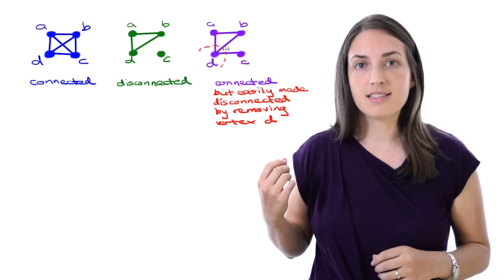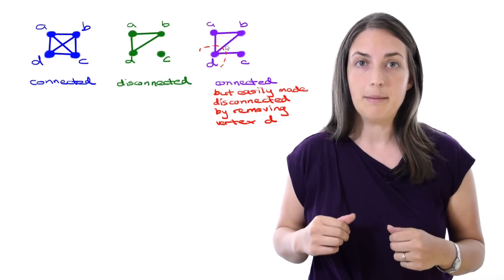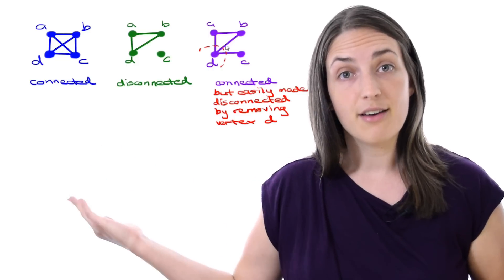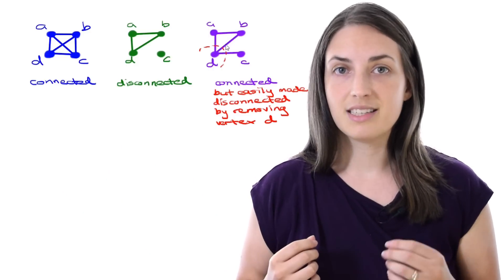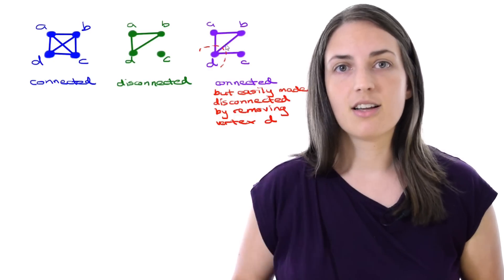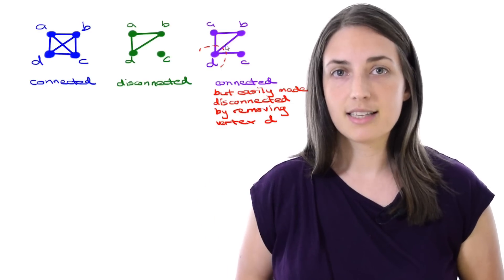If we remove vertex D, then vertex C will be in a different component than A and B. That's a cool property. Notice that the leftmost graph does not have that property. If you were to remove a single vertex there, the graph would still be connected. This tells us there is an important feature happening in the rightmost graph. Let's define it.